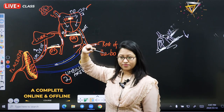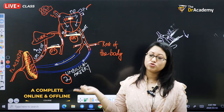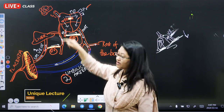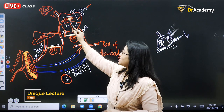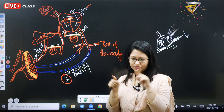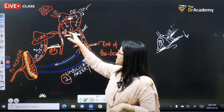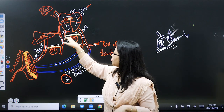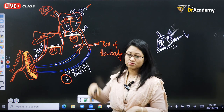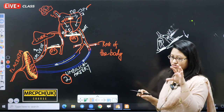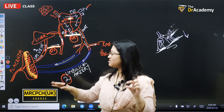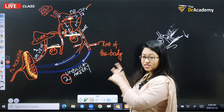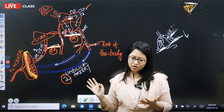Regarding the foramen ovale: blood flows from the right atrium to the left atrium — not from left to right as in adults, because pressure is higher on the right side in the fetus. The foramen ovale is like an ASD — a defect in the interatrial septum. For the ductus arteriosus: blood goes from the right ventricle to the pulmonary artery and then through the ductus arteriosus — not directly from the ventricle. Keep this picture in your memory while answering such questions.